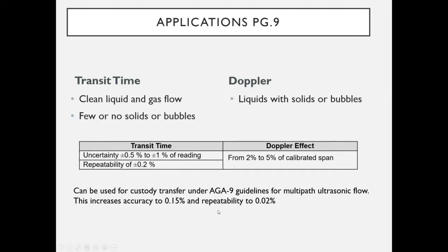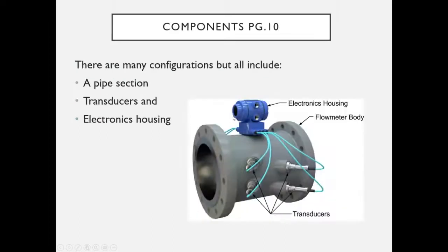Using the multi-path approach gives a significant accuracy advantage. Doppler accuracy is far less precise, ranging 2–5% of calibrated span. Looking at the components of an ultrasonic transmitter: most configurations include some form of pipe section or spool, transducers or transmitters and receivers that send and receive ultrasonic pulses, and an electronics housing with display and configuration interface for utilizing the signals from the sensors.